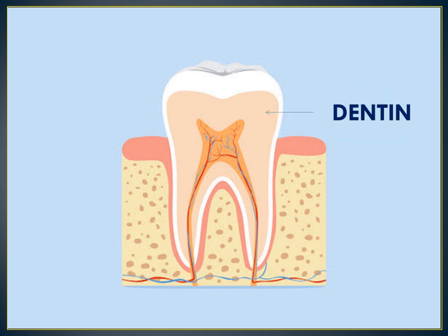Next is dentine. Dentine is the substance between enamel or cementum and the pulp chamber. It is secreted by the odontoblasts of dental pulp. The formation of dentine is known as dentinogenesis, and the porous yellow-hued material is made up of 70% inorganic material, 20% organic material, and 10% water by weight.